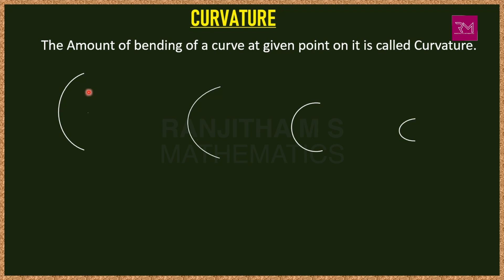If the amount of bending of a curve is less, the curvature value is also less. Greater the amount of bending, greater will be the curvature. If the bending is less, the curvature value is less; if bending is more, the curvature value is also more. This is about curvature of a curve.